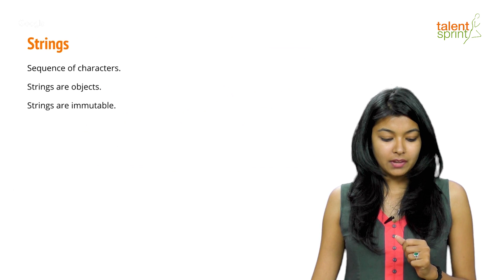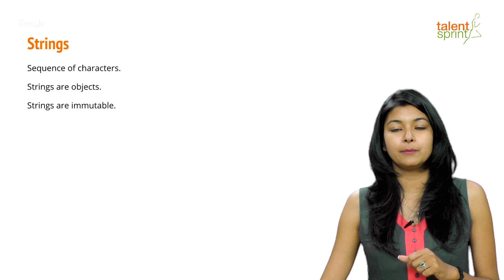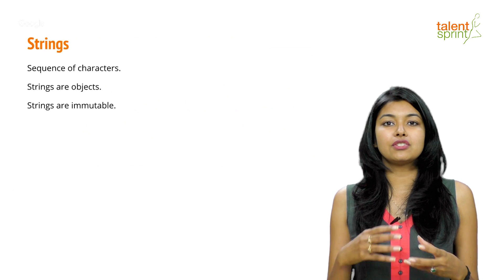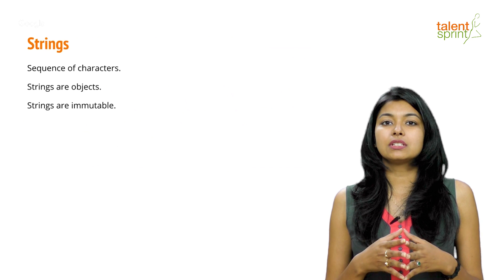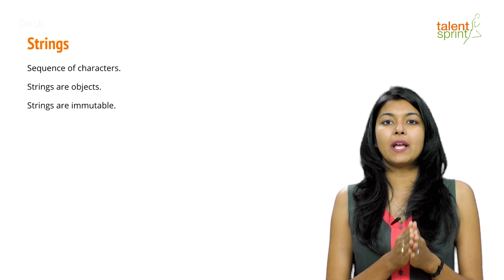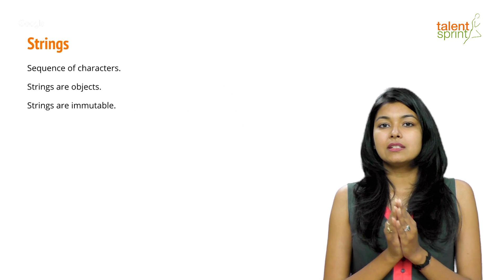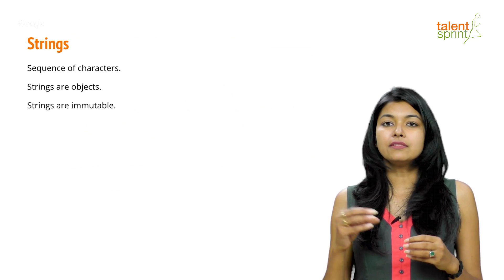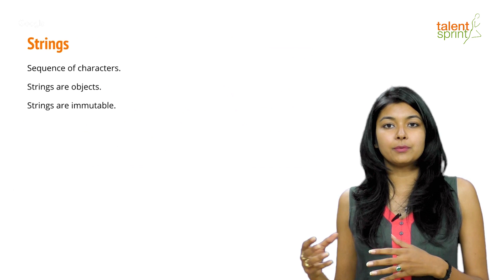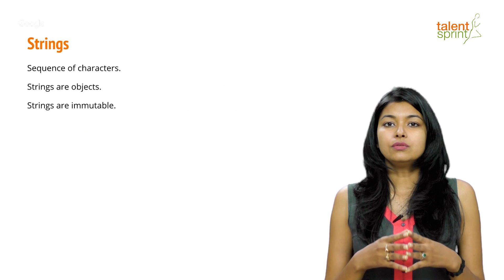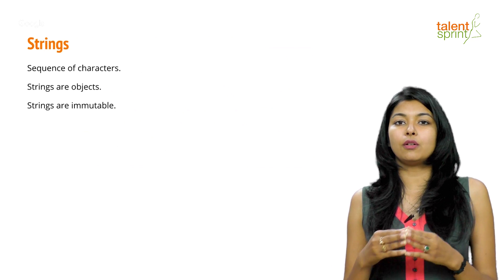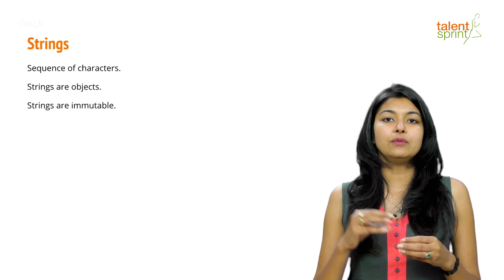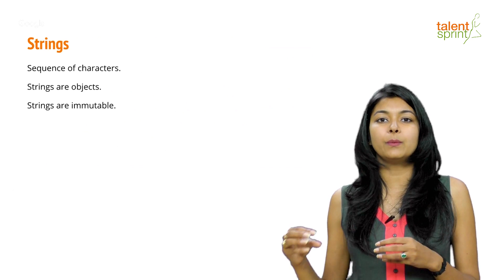In Java, strings are objects — they are not primitive data types like integer or double. Strings are also immutable. Now what is immutable? Whenever you declare an integer, the value stored inside can be changed throughout the program — those are mutable data types. Strings however are immutable, so once you create a string object and assign a value, any changes or operations like concatenation or substring always create a new object where the new value is stored.